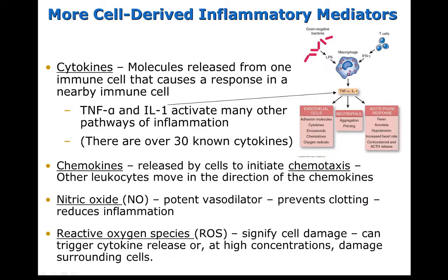There are some additional cell-derived mediators that are important. Cytokines are released from one immune cell to call other immune cells, and there are over 30 cytokines — remember tumor necrosis factor alpha and interleukin-1. Chemokines are released by injured cells to initiate chemotaxis, calling other white blood cells to the area of injury. Nitric oxide is a potent vasodilator released by the cell; it helps prevent clotting and also reduces inflammation. Finally, reactive oxygen species signal cell damage and can trigger cytokine release, but at higher concentrations they actually become damaging to surrounding cells.